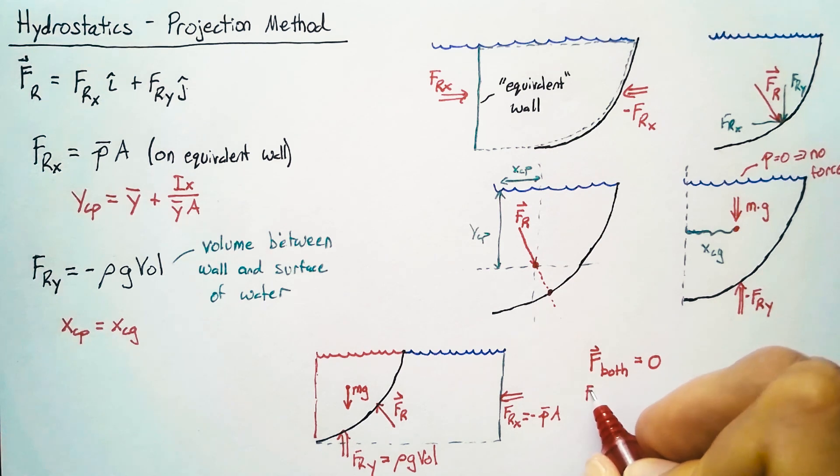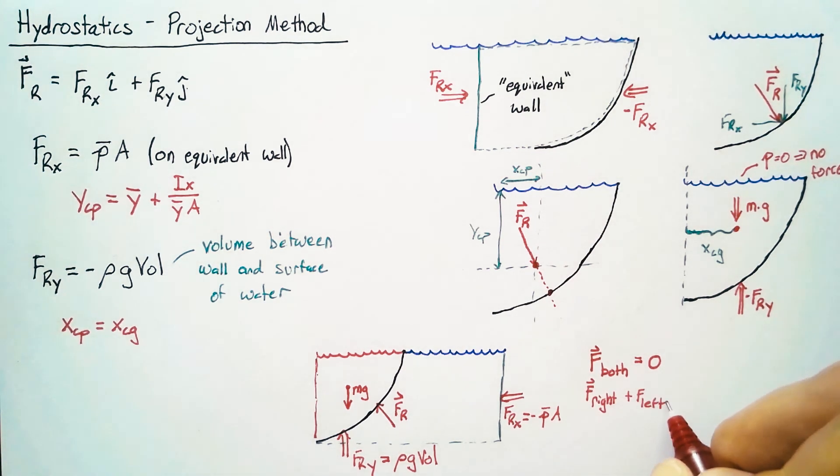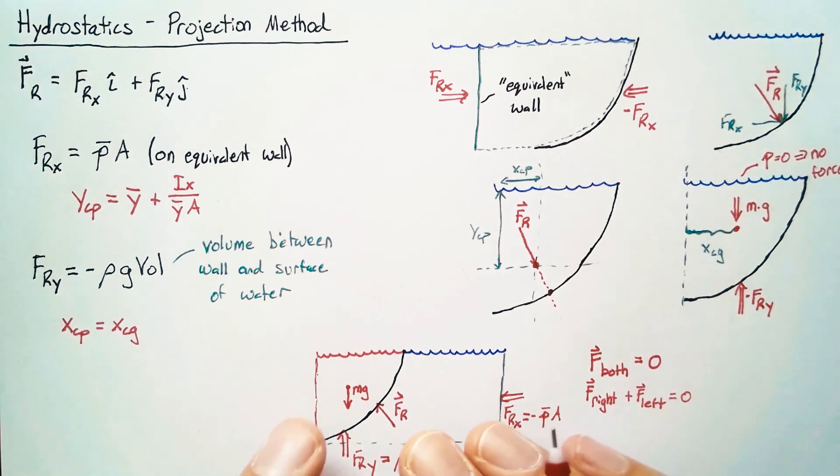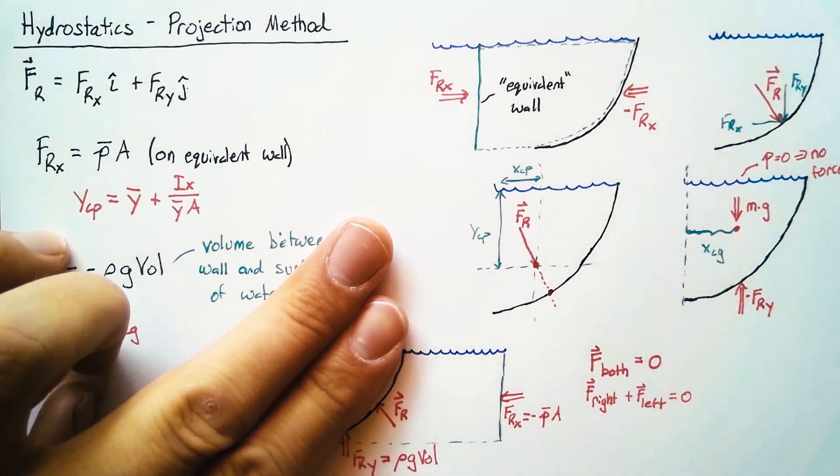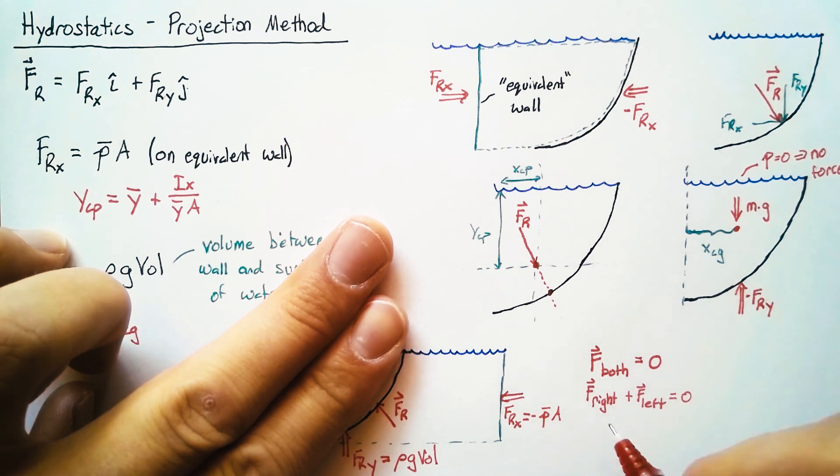That force both is just equal to the force of the right plus the force of the left. So what happens if we take one side or the other away? Well, if we get rid of the water on the left side of our problem, then the right side is just going to be the force of both sides minus the force of the left side.